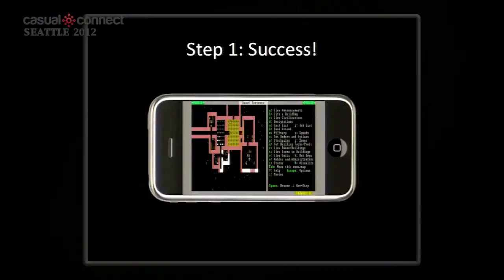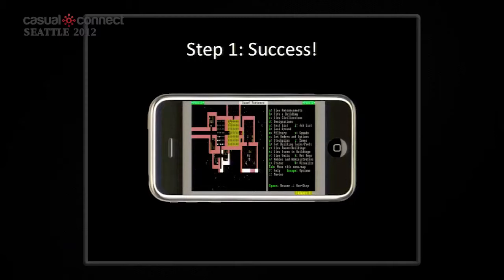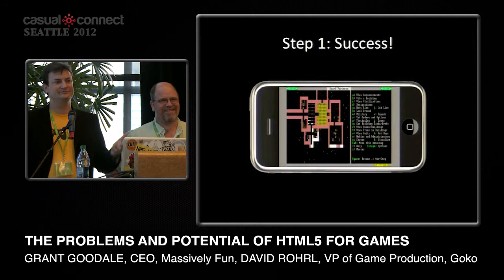So we'll start with the easy point: success. You've already had a successful game — maybe it's a DJ game. You already have a successful game, it's on iOS, fantastic. What's next? Well, most likely you'll want to replicate that success by porting your game over to as many platforms as possible. If it worked in one place, it'll work in many places, right?